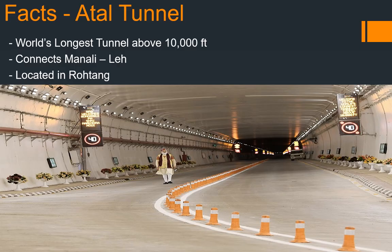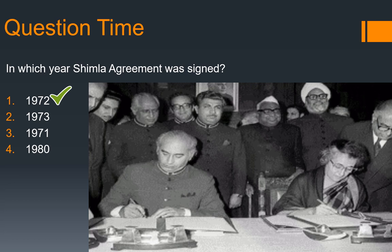Now a very important tunnel in Himachal Pradesh: the Atal Tunnel. It was inaugurated by Prime Minister Modi in 2020, and its length is 9.02 km, making it the world's longest tunnel above 10,000 feet. It connects Manali to Leh and is located in Rohtang. Coming back to our opening question: in which year was the Shimla Agreement signed? The correct answer is 1972. On July 2nd, 1972, during the war between Pakistan and India, it was signed in Raj Bhavan, Shimla, Himachal Pradesh, by Prime Minister Indira Gandhi and President Zulfikar Ali Bhutto of Pakistan, bringing an end to the conflict between India and Pakistan.